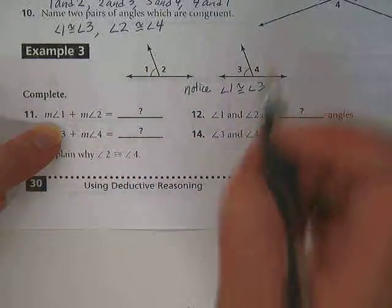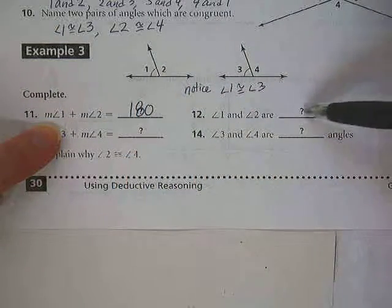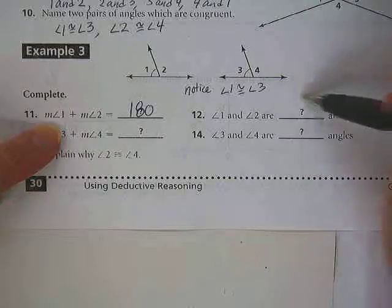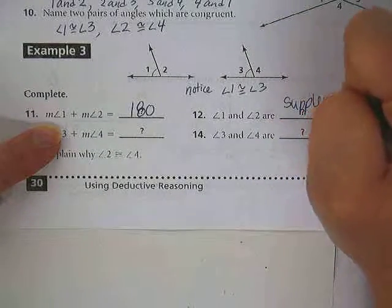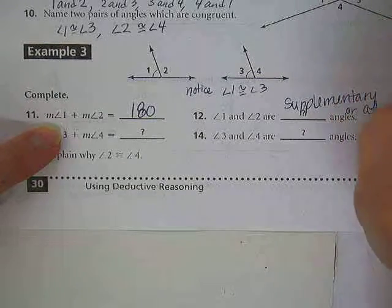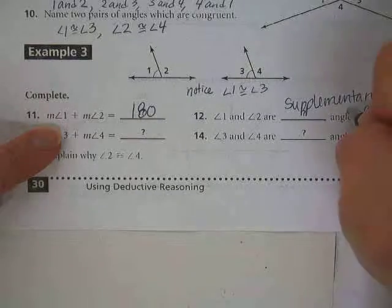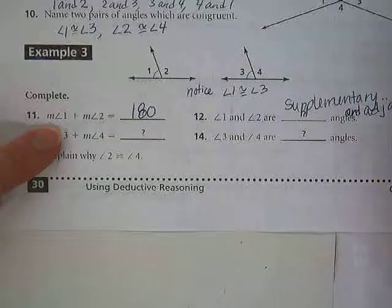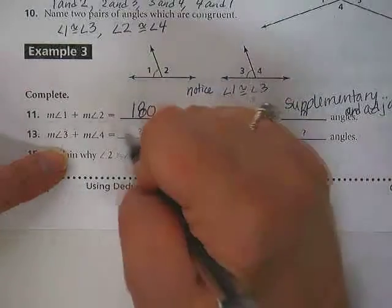Okay, now let's do number 11. What does angle 1 and angle 2 add up to? 180. That's because they are a linear pair, they're supplementary, whatever you want to put there. I think the answer they're looking for is supplementary. But adjacent angles would also work because they're both. They're both adjacent and they are supplementary. So maybe I want you to write both answers.